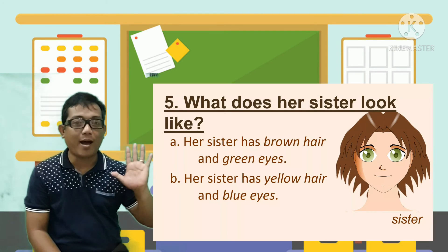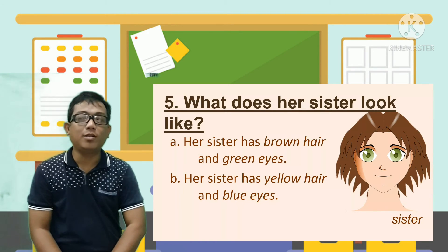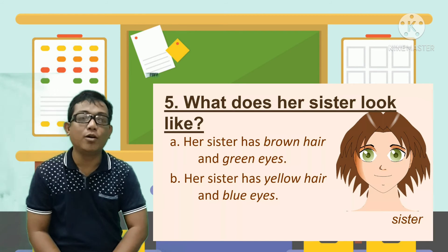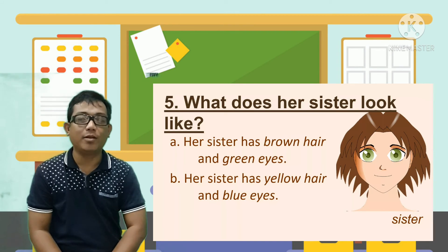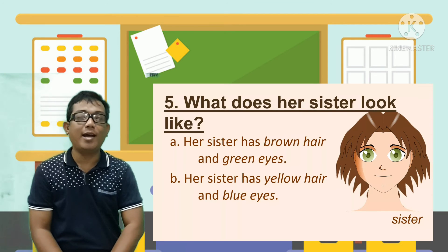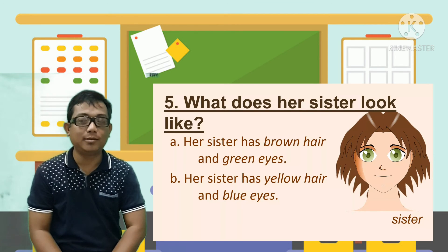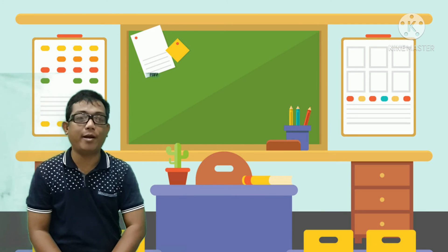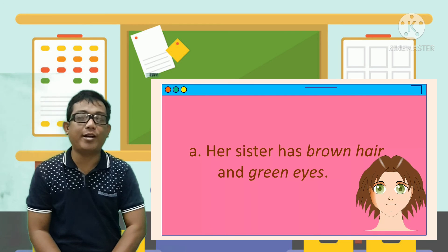Number 5. What does her sister look like? A. Her sister has brown hair and green eyes. B. Her sister has yellow hair and blue eyes. The correct answer is Letter A. Her sister has brown hair and green eyes.